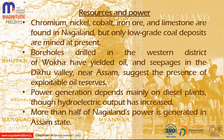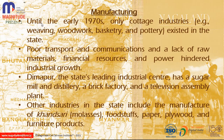More than half of Nagaland's power is generated in Assam. Until the early 1970s, only cottage industries such as weaving, woodwork, basketry, and pottery existed. Poor transport, communication, raw materials, financial resources, and power hindered industrial growth. Dimapur is the state's leading industrial centre, with sugar and distillery mills, brick factories, and television assembly plants. Other industries produce foodstuffs, paper, plywood, and furniture products.